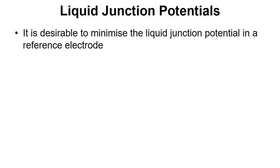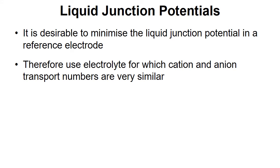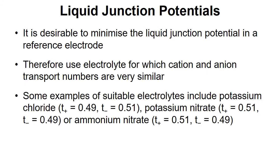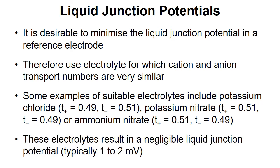Now it's desirable to minimize the liquid junction potential for the reference electrode, and so we can use an electrolyte for which the cation and anion have transport numbers that are very similar. Some examples include potassium chloride, potassium nitrate, and ammonium nitrate. If we use one of these electrolyte pairs, this anion and cation combination, we get a negligible liquid junction potential typically around one or two millivolts. And so it's one of these that we would use in order to make our reference electrode and minimize that liquid junction potential.